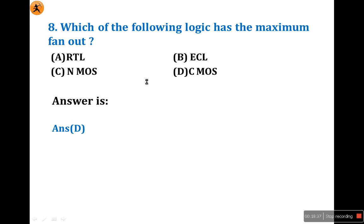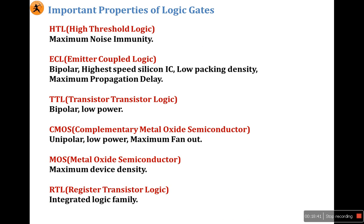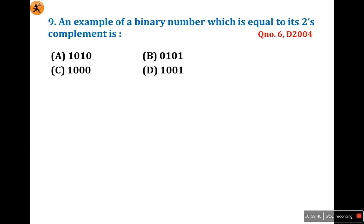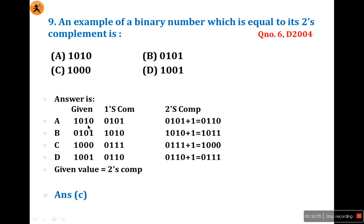Ninth question: identify the binary number which is equal to its two's complement. I already explained this in the 2004 question six. Given the options: option C is the number 1000, whose two's complement is also 1000. Options A, B, and D — the given number does not equal its two's complement. So the answer is C.